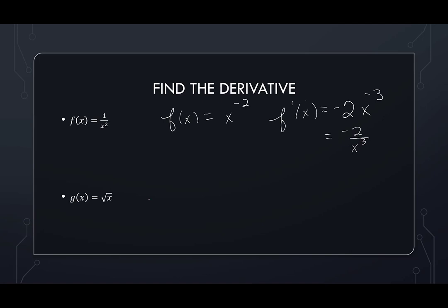Then I have g of x is the square root of x. So let's again rewrite g of x is x to the one half. When I take the derivative, the one half goes down. I have x. A half minus 1 is negative one half. Again, this is fine. This does the power rule. I brought the power down. I subtracted 1. But you could also rewrite it a different way.